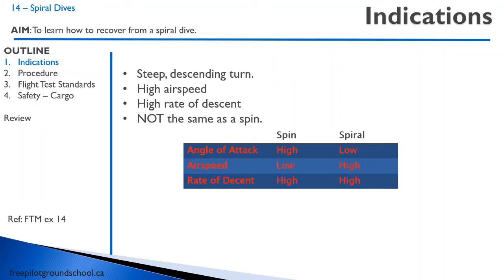In a spin, the angle of attack is high because the aircraft has stalled, whereas in a spiral dive, the airspeed is high so the angle of attack is low. But both of them have a steep or high rate of descent.